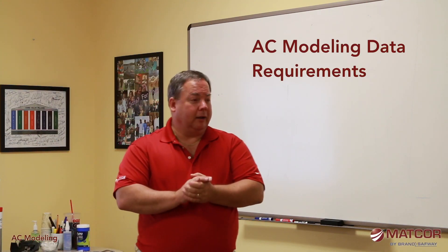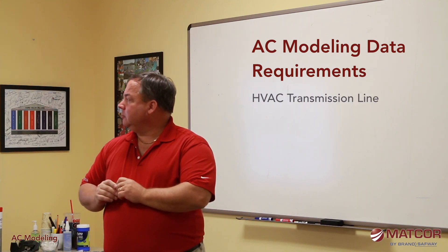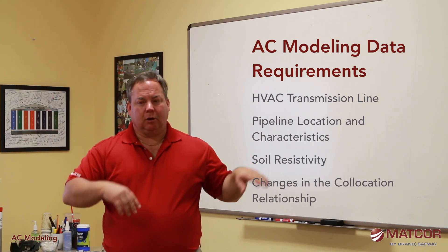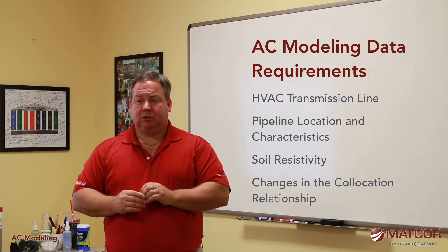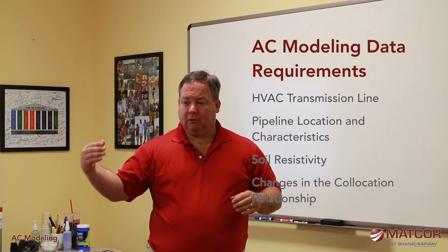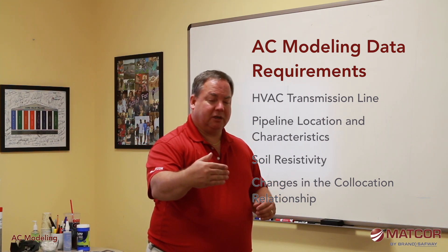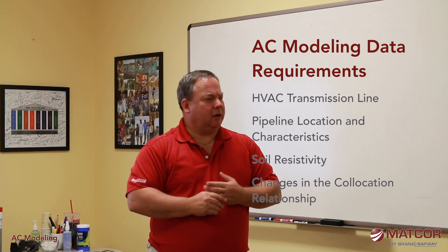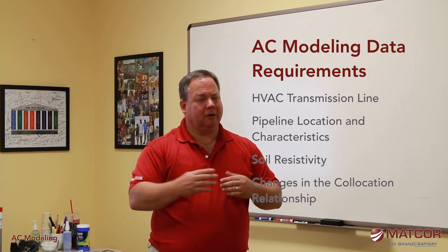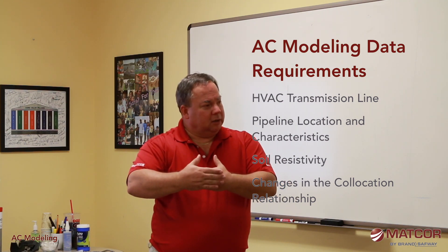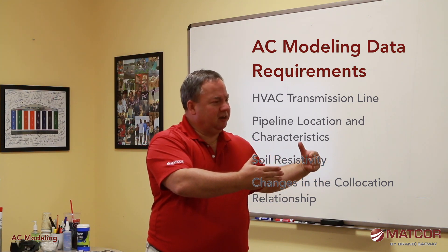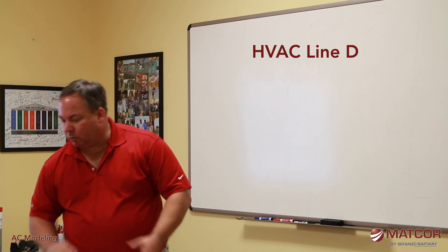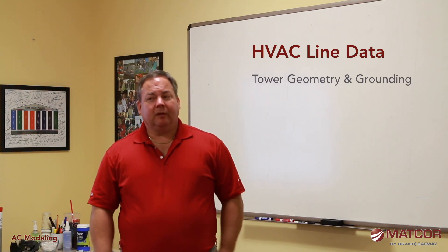We need a lot of data to fill the model. We need data on the HVAC transmission line, the pipeline, soil resistivity, and we need to know where changes occur — these are called excitation points. As the pipeline moves along, if there's a sudden change in the pipeline or the high voltage tower line, that becomes an inflection point. If the pipeline and HVAC line run parallel for a long distance and then suddenly deviate, that's where problems will likely occur.